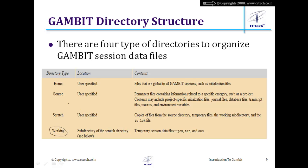Whenever GAMBIT starts, it creates a temporary directory in the working directory where files are saved automatically. This is useful if GAMBIT crashes or there's a power failure — you can retrieve your work. GAMBIT puts three temporary files — DBS, JOU, and TRN — in this working directory. When you execute the save command, those files are copied to the parent home directory permanently.